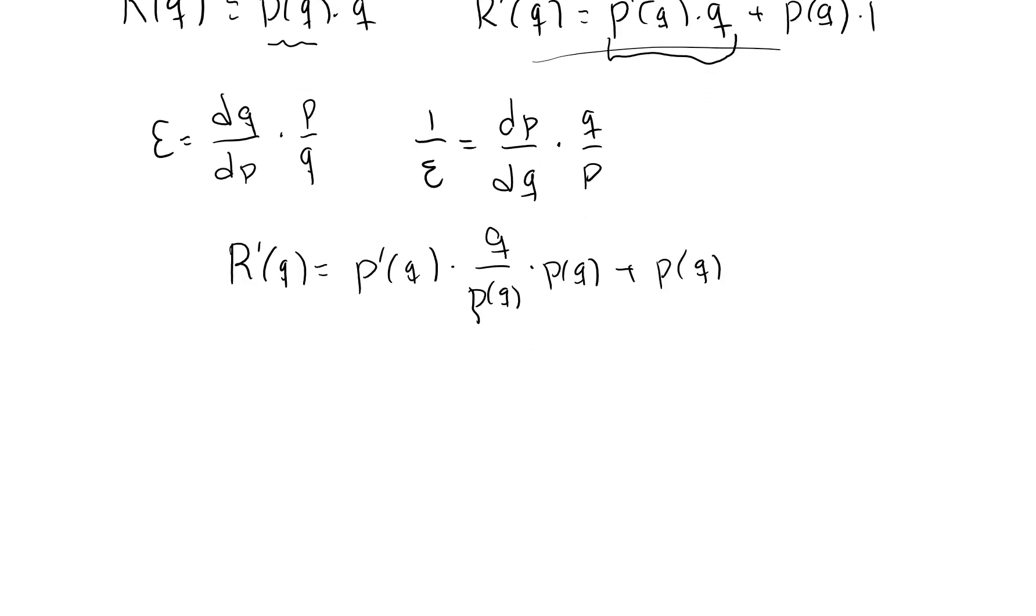And again I can factor out P of Q. I'm then left with this expression here. P prime of Q is the same thing as dP/dQ, and then we have Q over P. So this is precisely one over epsilon, and then plus one.